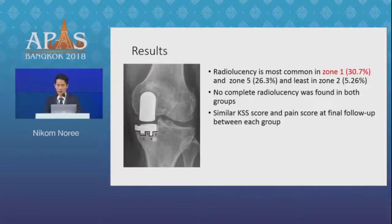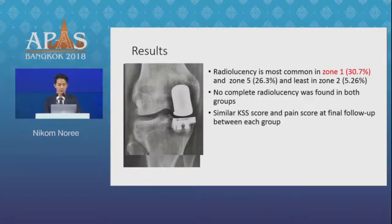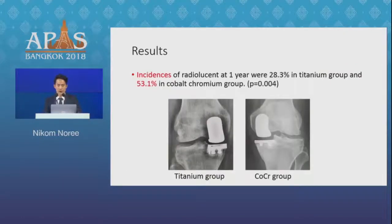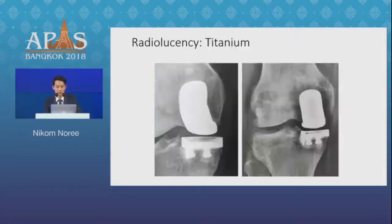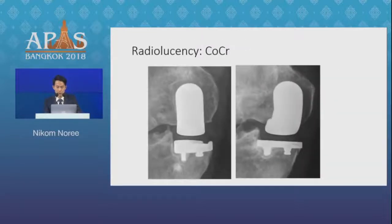NIS score and PES score were similar at final follow-up between each group. The incidence of radiolucency at 1 year was 28.3% in the titanium group and 33.1% in the cobalt chromium group. This table shows a high and significant incidence in the cobalt chromium tray, approximately 69.2% at the latest follow-up in the cobalt chromium group.